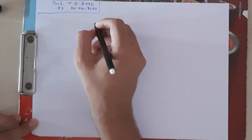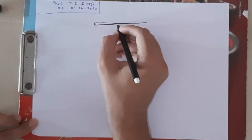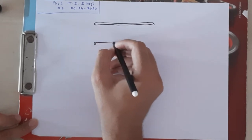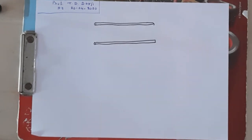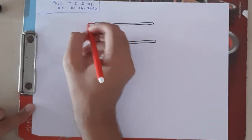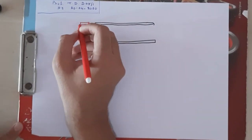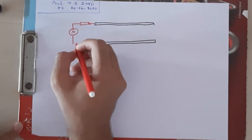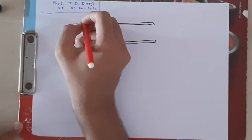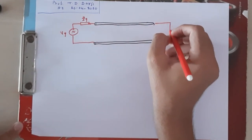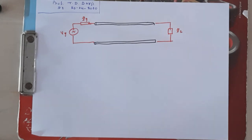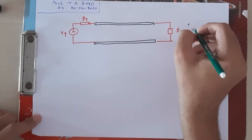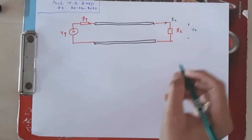A transmission line is nothing but two parallel conductors separated by a dielectric medium. Here I draw two parallel conductors with dielectric medium between them. At one end I connect a source with internal impedance Z_G and generator voltage V_G. At the other end I connect a load impedance Z_L. The voltage across Z_L is V_L, and the corresponding current is I_L.